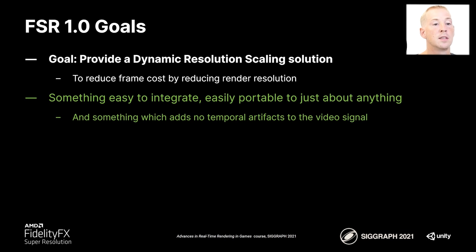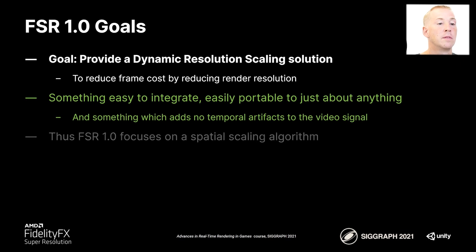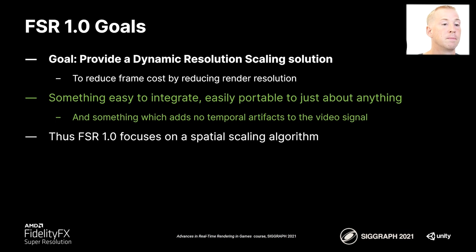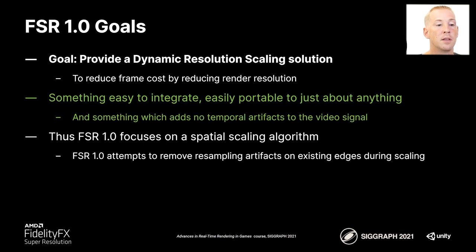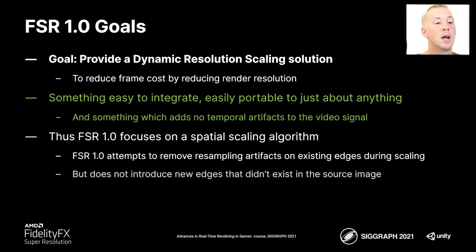If you use an anti-aliasing that doesn't have temporal artifacts and you process through this algorithm, it can't be adding any temporal artifacts that didn't exist. Thus for FSR1, the algorithm focused on spatial scaling and spatial sharpening. The scaler of FSR1 attempts to remove the resampling artifacts on existing edges that would normally happen using traditional resampling during scaling. The goal is to make the edge look as if it's native, but not to introduce new edges that didn't exist in the source image.